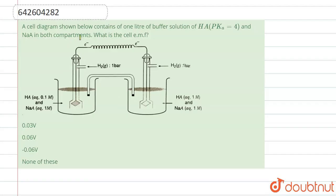The cell diagram shown below contains one liter of buffer solution of HA having pKa equals to 4 and NaA in both compartments. What is the cell EMF? Let us look at both compartments. We have our pKa given, pKa equals to 4.